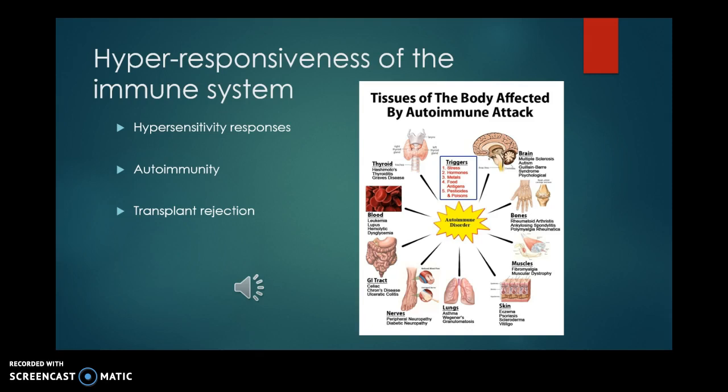On the other end, hyper-responsiveness of the immune system is when it gets a little out of control. A hypersensitivity response — in other words, allergies — is considered hyper-responsiveness, as is anaphylaxis. Autoimmunity is when the body turns upon itself and loses the ability to recognize self from non-self. People who have one autoimmune disorder are at much higher risk to develop others. For example, those with systemic lupus erythematosus may be more likely to also develop Raynaud's phenomenon, which has an autoimmune component.